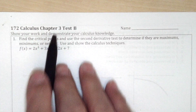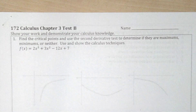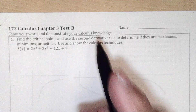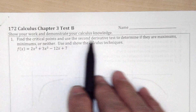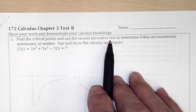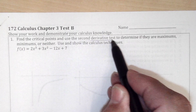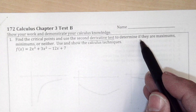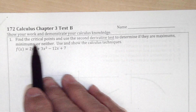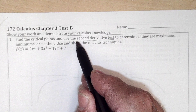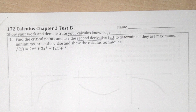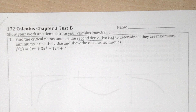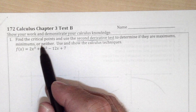Let's go over the Chapter 3 test. This is version B that I gave you folks. You're supposed to find the critical points and use the second derivative test to determine if they are maximums, minimums, or neither. Some of you didn't use the second derivative test. I gave you credit, but I asked you to do the second derivative test, so we're going to need the first derivative.